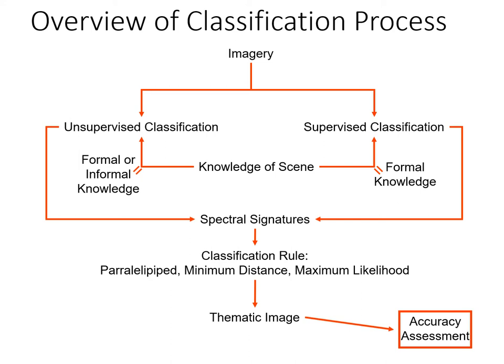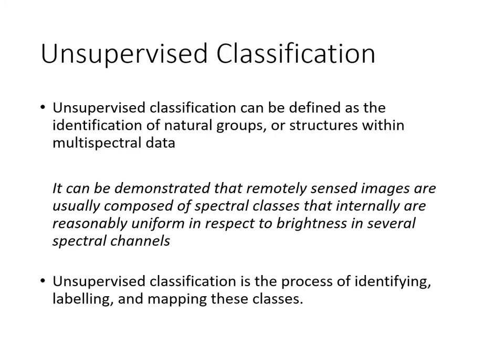Now we're through the types of classes, we can start talking about unsupervised classification. Unsupervised classification is just identifying natural groups of spectrally similar pixels, or structures in multispectral data. For instance, if you were looking at the distribution of pixels within a graph — band 3 versus band 4 — you might see structures, places where there's a whole bunch of points. That's how we think about it: a little structure within the data set.